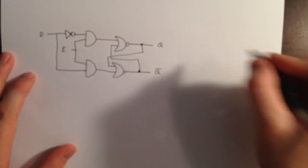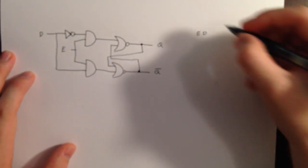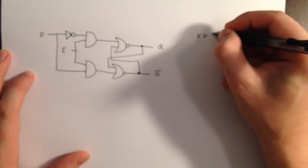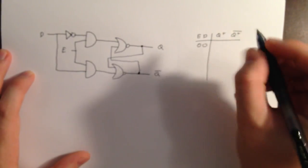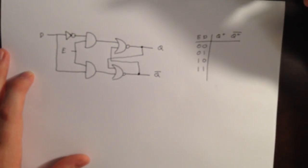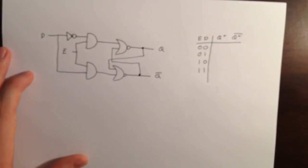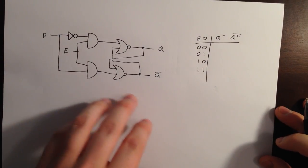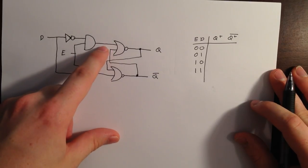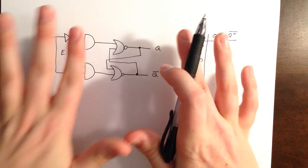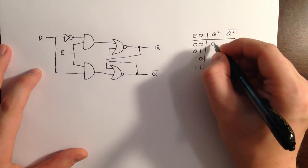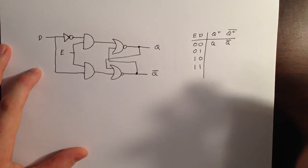Let's make a truth table for the D latch. We have two inputs, D and E, and then Q-plus and Q-plus-not. Let's write down all of our input combinations. If E is zero, then these AND gates are not able to activate and they're always going to output a zero. And remember from our RS latch, if we have two zeros as our input, then Q-plus is just going to be Q, and Q-plus-not is just going to be Q-not. The same applies when E is zero and D is one, because our AND gates can't activate.